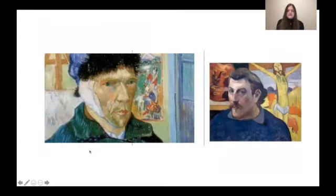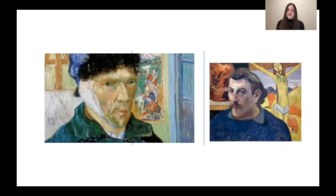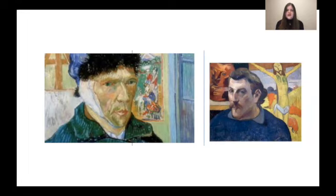My second research project focused on the relationship between two artists in what scholars call the Arles experiment. This references the two months that Vincent van Gogh and Paul Gauguin spent working and living together in the south of France. Van Gogh hoped that he and Gauguin would form what they called the Studio of the South, a colony that would serve as an oasis for creating art. Though this dream wasn't realized, this period in the careers of both artists marked a period of intense dialogue between them.